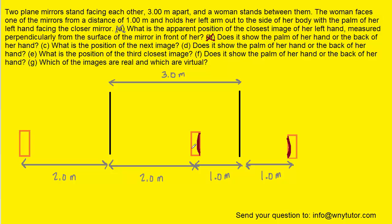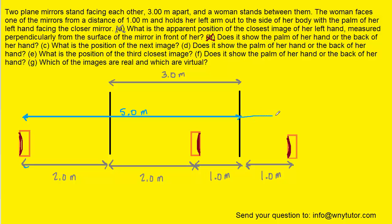Since her left hand is two meters from that mirror, there's going to be an image back there that is also located two meters behind the mirror. The back of her hand would be showing up in that mirror, so that means the palm would actually be on the other side. The distance from this image to the nearest mirror — nearest to the girl — if you count it up, that's five meters: two meters to the mirror, two more meters to her hand, and then one additional meter to get to that nearest mirror. So if this image is five meters from the nearest mirror, the image of that particular image will also show up five meters behind that nearest mirror.